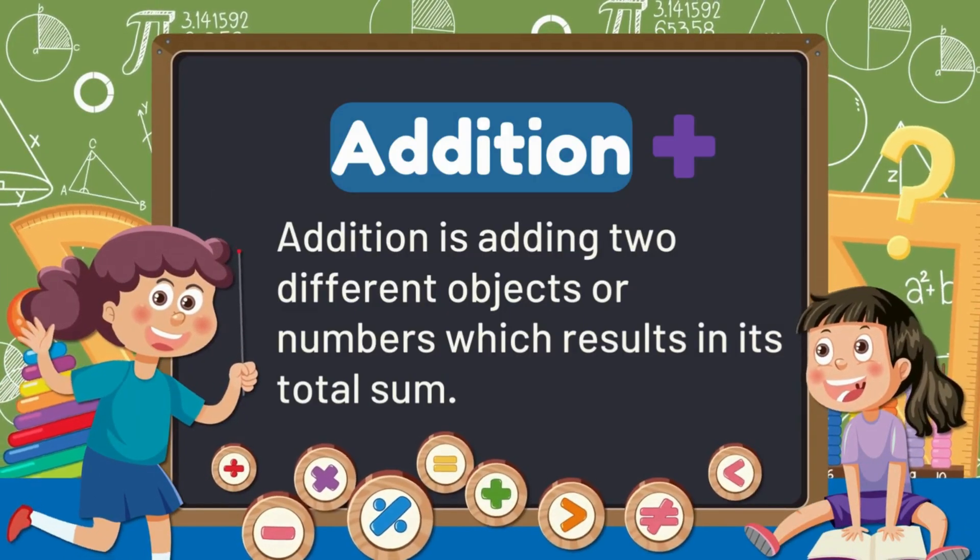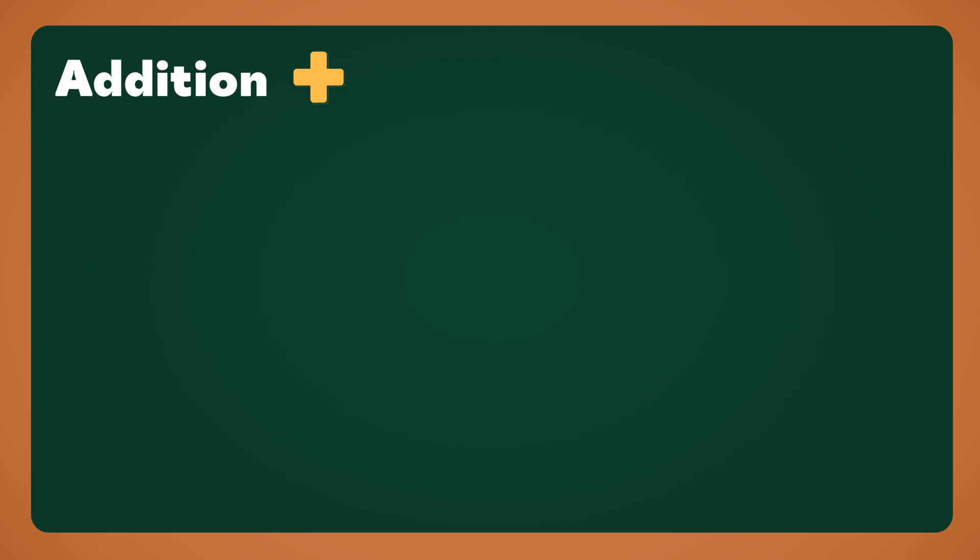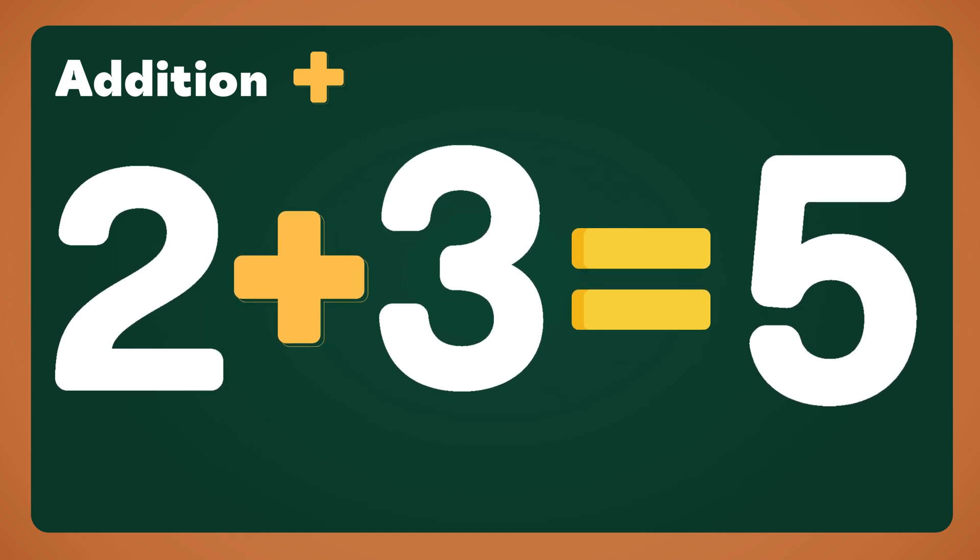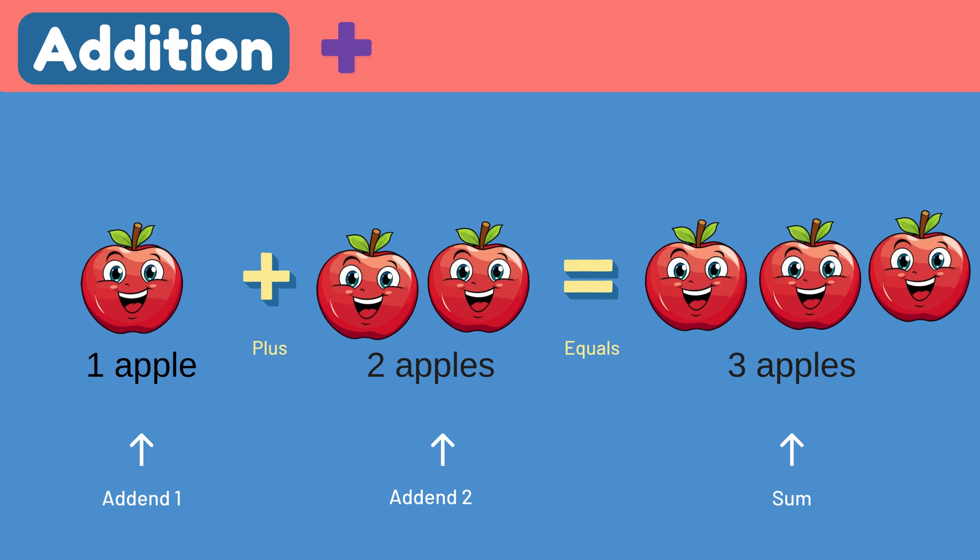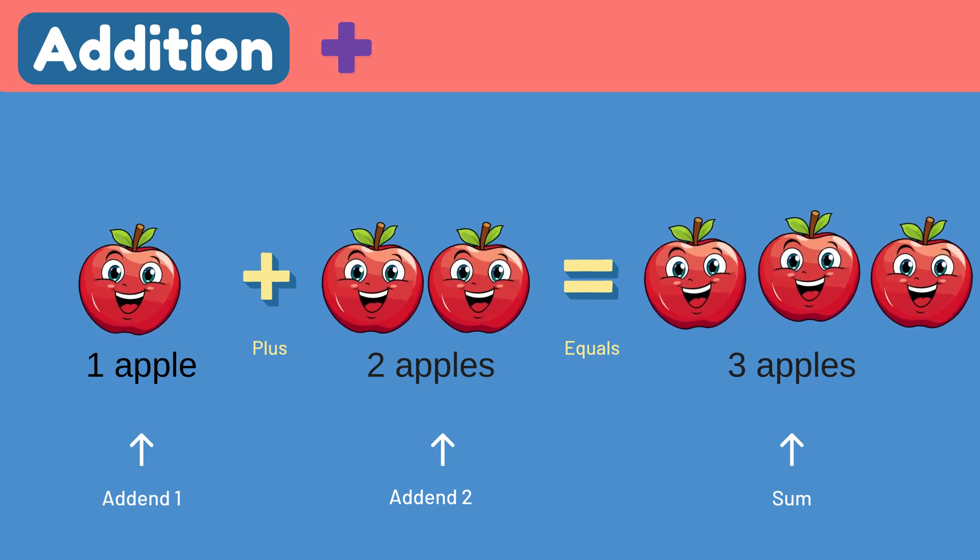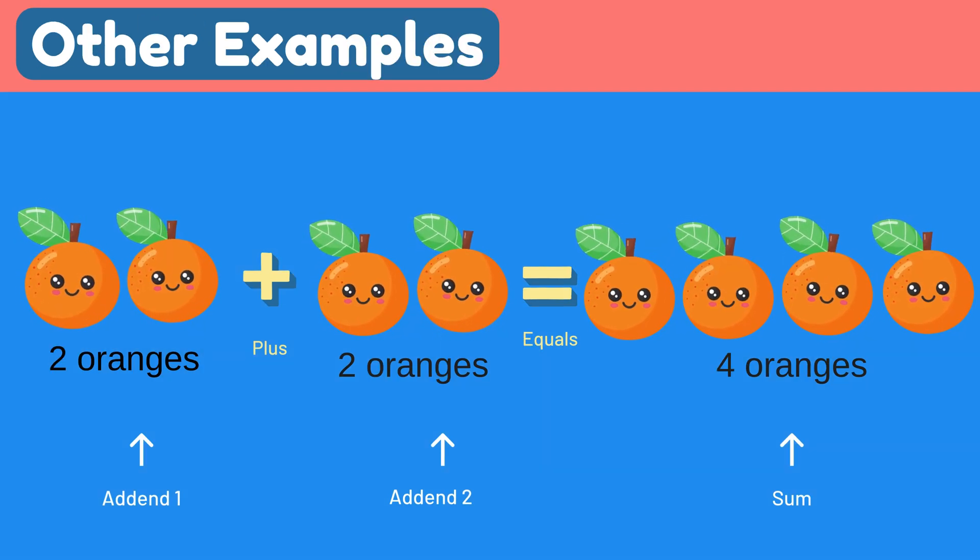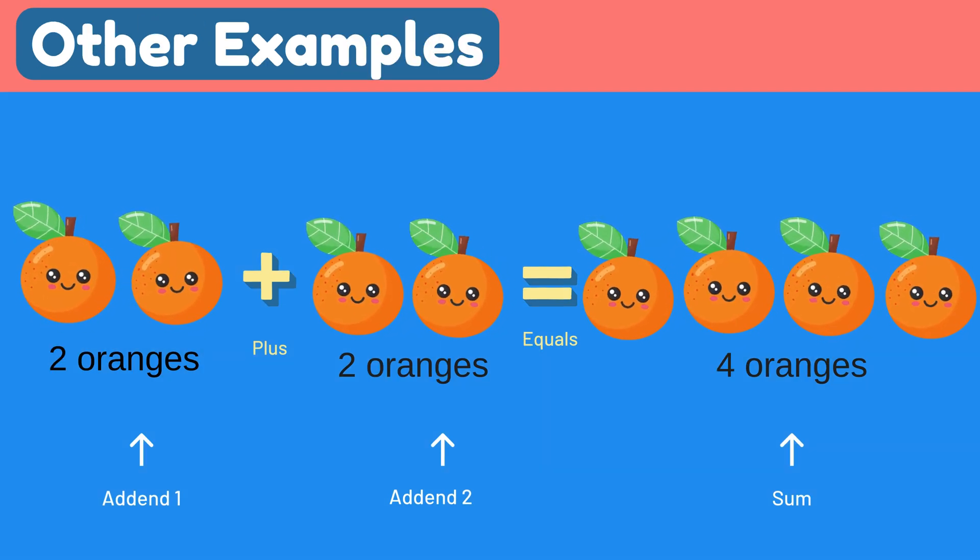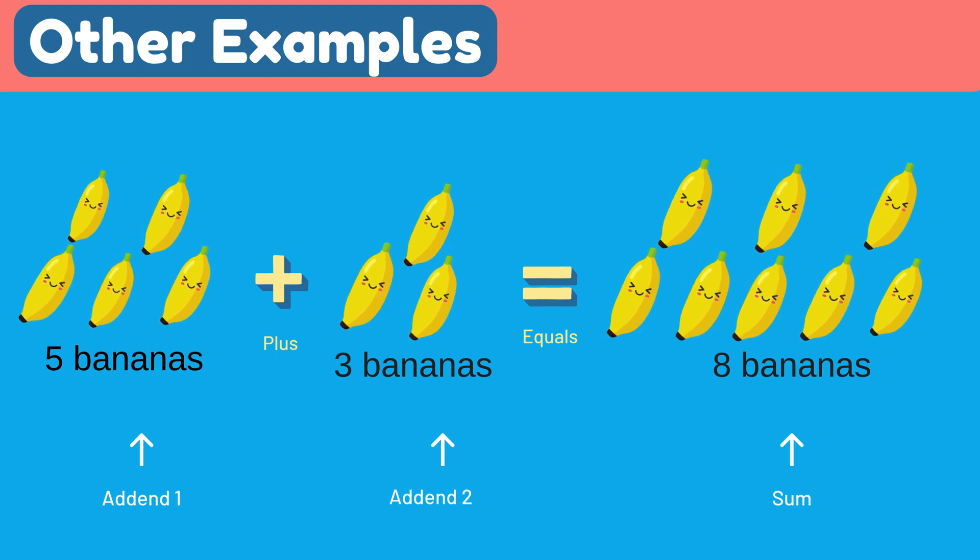Addition is adding two different objects and numbers which results in its total sum. Two plus three equals five. Adding one apple plus two apples equals three apples, more apples for me and you. Adding two oranges plus two oranges equals four oranges. Just look at that, the number grew. Adding five bananas plus three bananas equals eight bananas. Adding up is what we do.